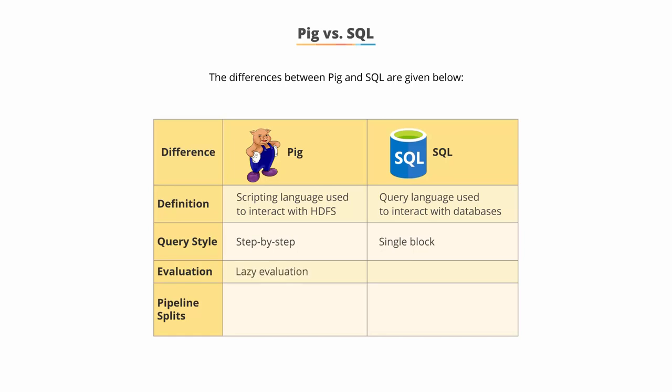Also, Pig does a lazy evaluation, which means that data is processed only when the store or dump command is encountered. SQL, on the other hand, offers immediate evaluation of a query.